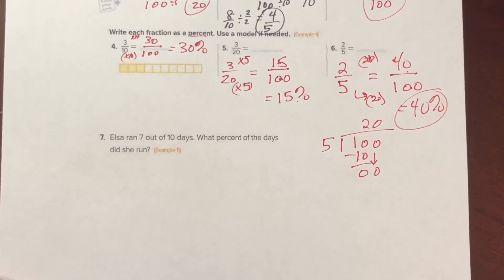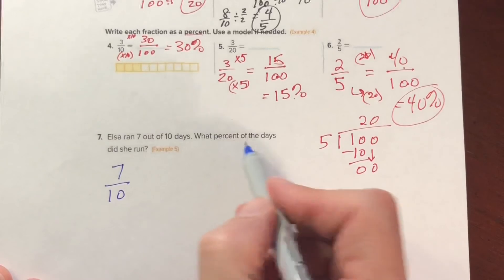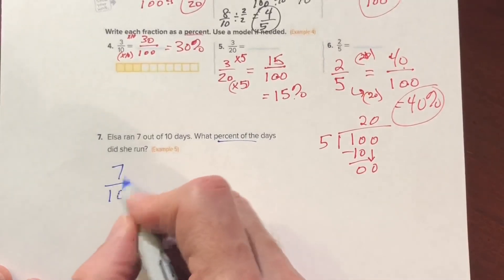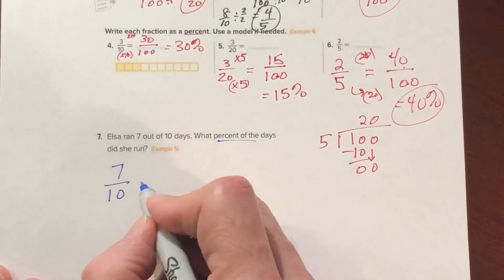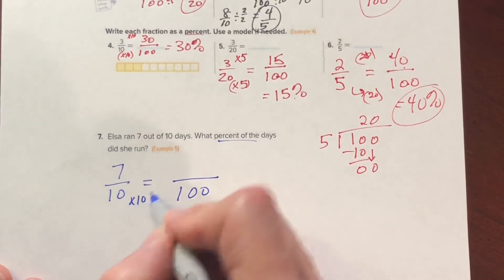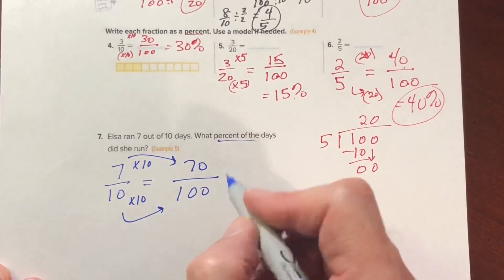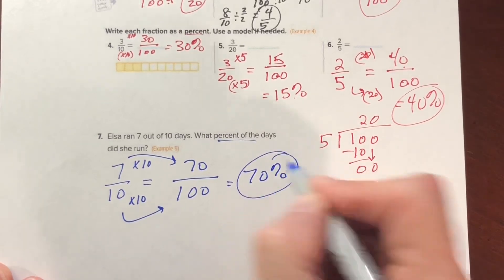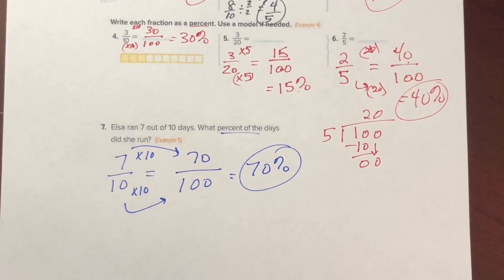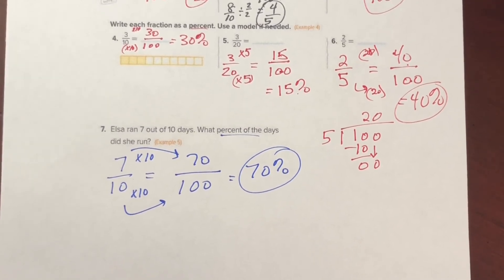Last problem: Elsa ran seven out of 10 days. What percent did she run? We have the fraction 7/10 and need to make it equivalent to a ratio with 100 in the denominator. 10 times 10 is 100, so 7 times 10 is 70. That's 70 percent. Homework is page 105 odds and page 107 odds. Go have some fun with the homework and let me know if you have any questions.